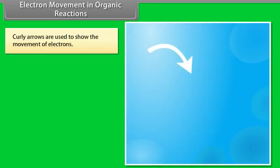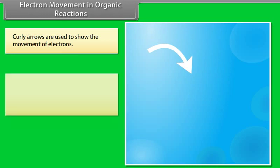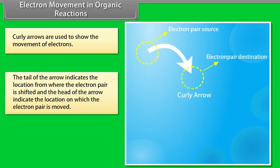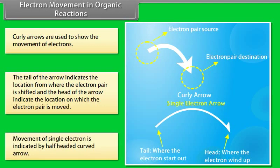Electron movement in organic reactions: curly arrows are used to show the movement of electrons. The tail of the arrow indicates the location from where the electron pair is shifted and the head of the arrow indicates the location to which the electron pair is moved. Movement of a single electron is indicated by a half-headed curved arrow.